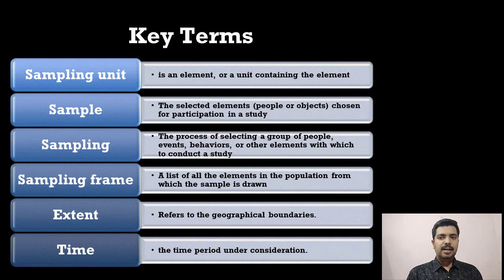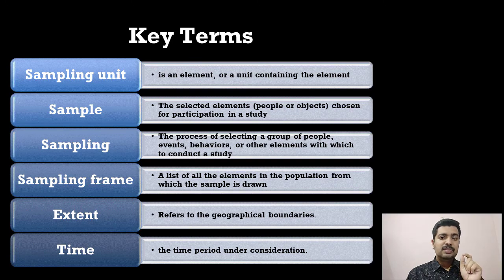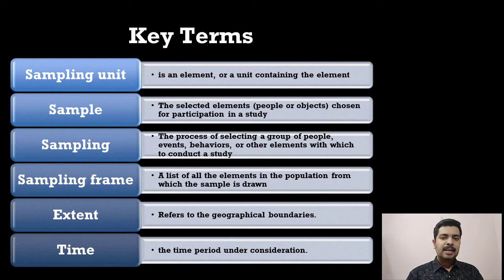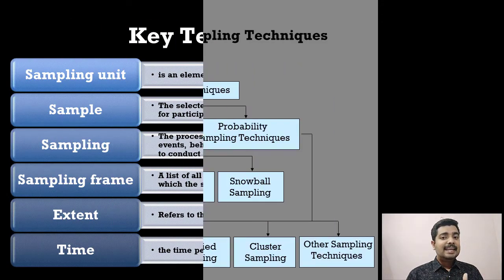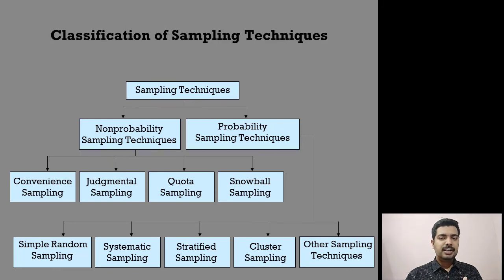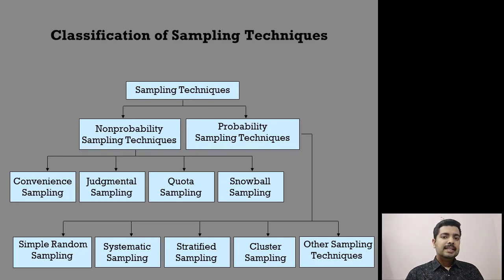The major key terms in research methodology, especially in sampling, are: first, the sampling unit — it is an element or a unit containing the element. In this case, the sampling unit is one particular child below the age of 14. Next, sample — the selected elements chosen for participation in a study. If you have taken 1000 kids, those 1000 kids are the sample. Then, sampling — the technique being used. There are different techniques: simple random sampling, convenience sampling, quota sampling, and others.